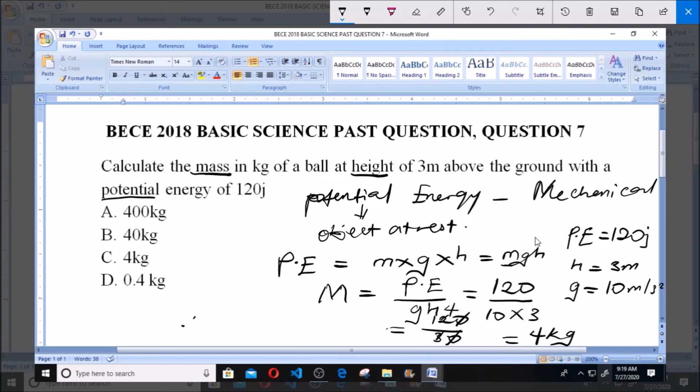So therefore, the mass of the ball is equal to 4 kg. 4 kg is our answer. And from the options, C says 4 kg, which is our answer. Thank you very much. Please ensure you subscribe to our channel for more videos.